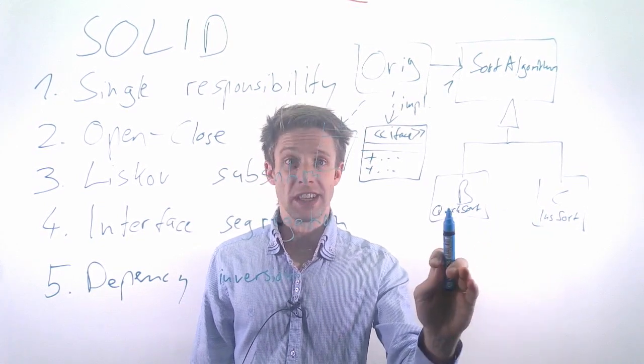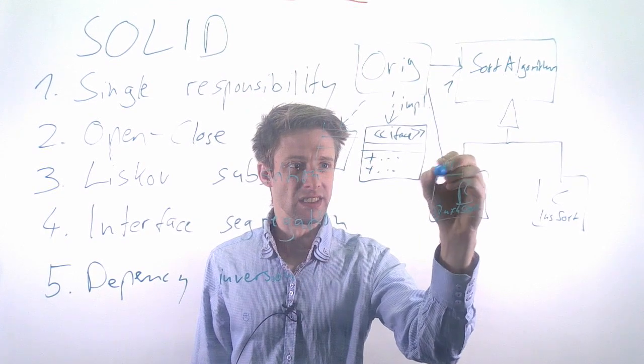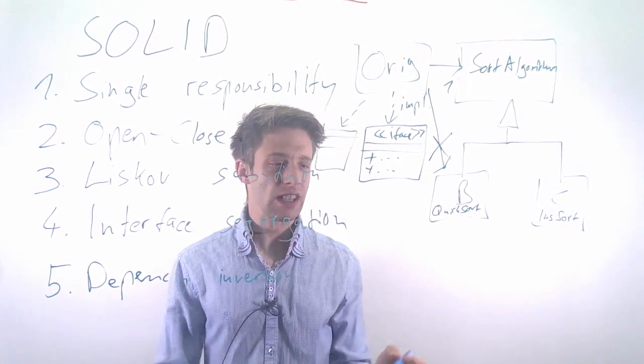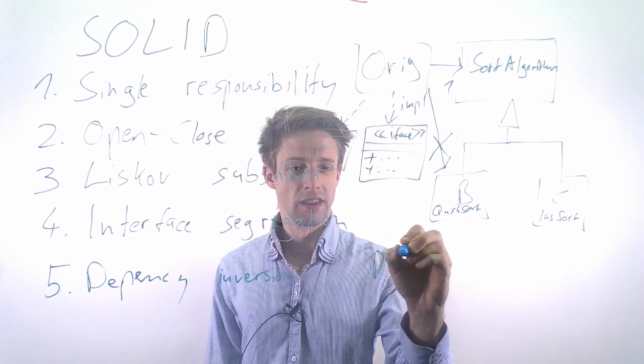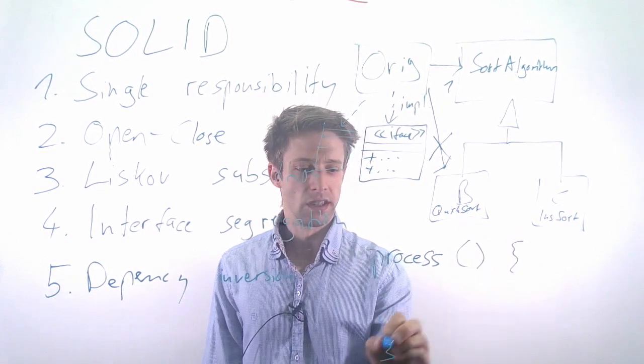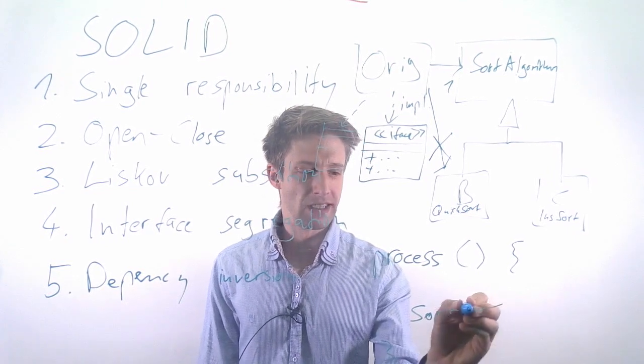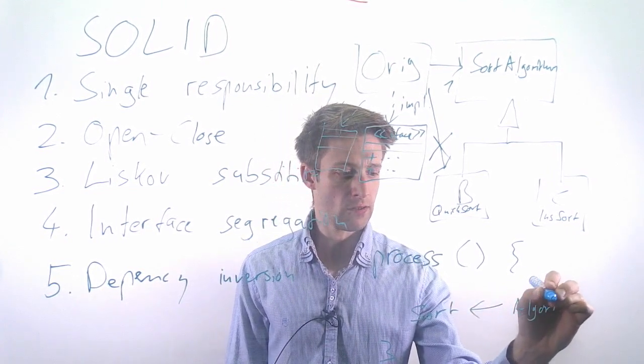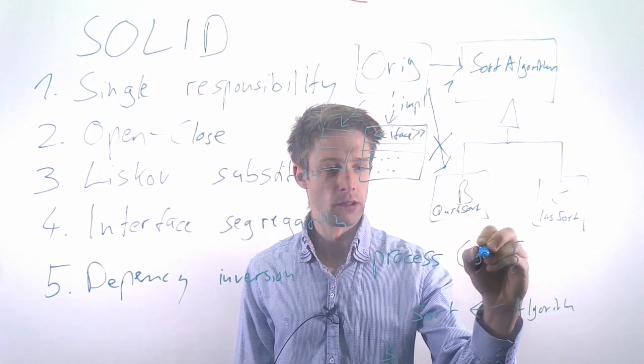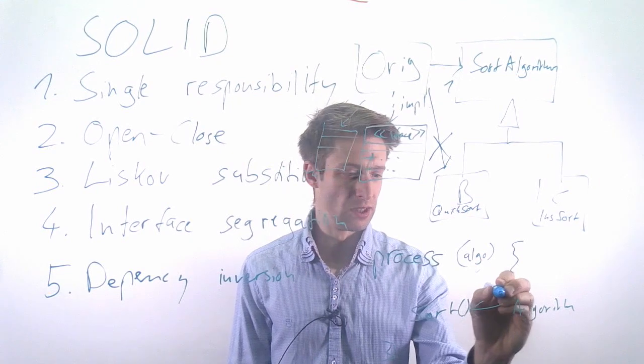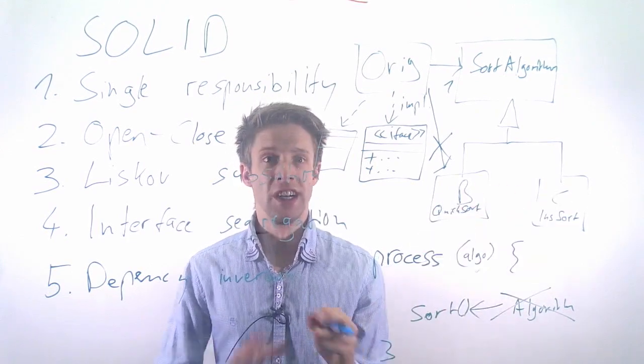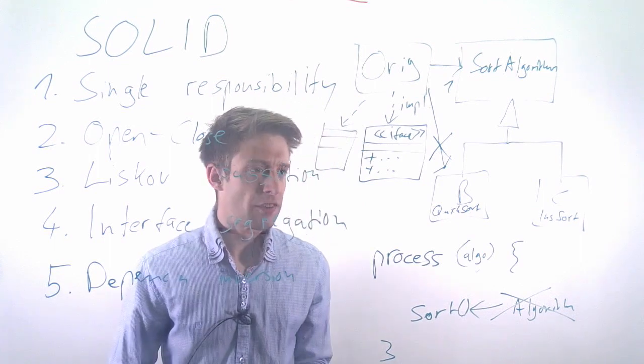Usually how this looks in code is that you have a method that processes something, and in the code there's some sorting going on. Instead of hard-coding a certain algorithm, you add the algorithm as a parameter and then call it. You don't provide a specific algorithm, but you give whoever uses it the possibility to insert any kind of specific solution. This makes testing easier, makes extension and reuse much easier.